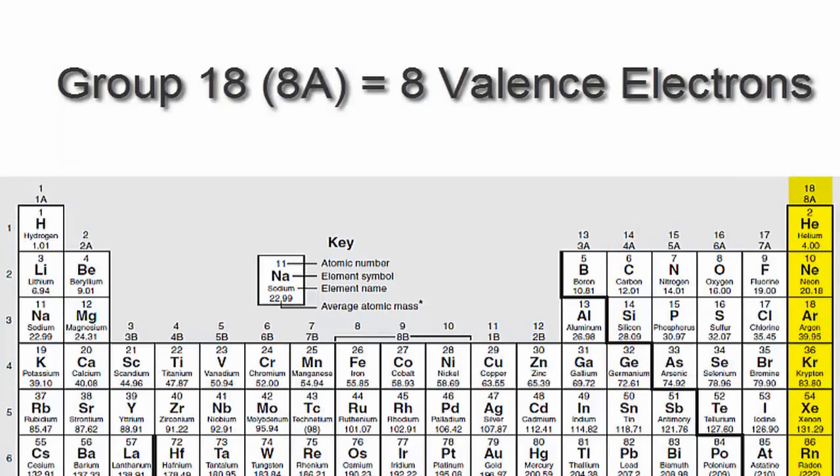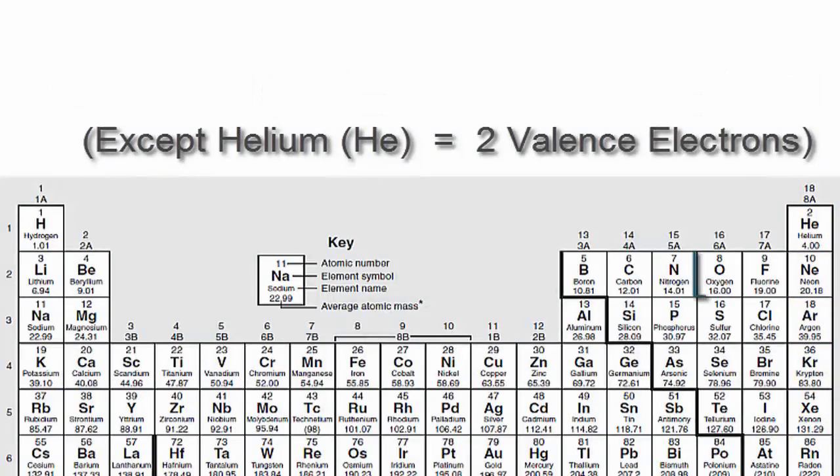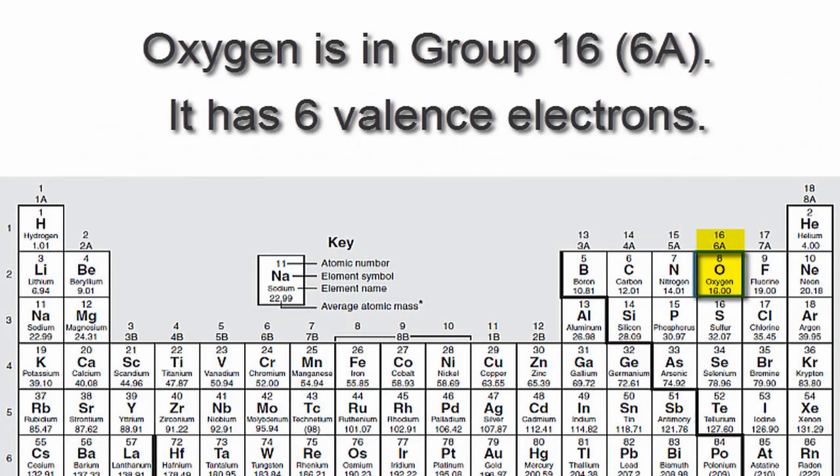all the way up to group 18 or 8A, which have eight valence electrons. Oxygen is in group 16 or 6A, so it has six valence electrons.